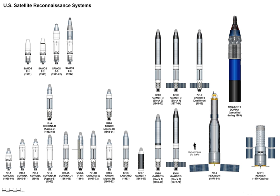The first generation type, Zenit, took photographs and then ejected canisters of photographic film which would descend to Earth. Corona capsules were retrieved in midair as they floated down on parachutes. Later, spacecraft had digital imaging systems and downloaded the images via encrypted radio links.